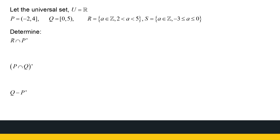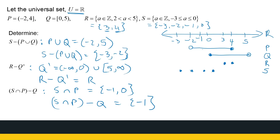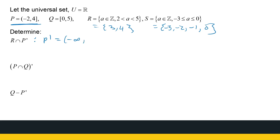Next operation using the same sets. R intersection P's complement. First find P complement: P is from minus 2 to 4, so P's complement is from minus infinity to minus 2 (included, since minus 2 is not in P), union 4 to infinity (excluding 4, since 4 is in P). R is just 3 and 4. Is 3 in P complement? No. Is 4 in P complement? No. So we have just an empty set.